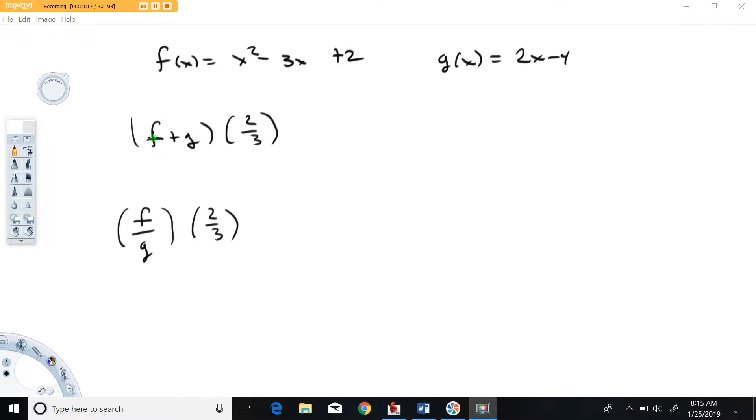We're going to try to find f plus g of two-thirds. Now this is function language, I have to know how to read this. This is not a times here. What this means is to find this function and then two-thirds is the input. So first of all let's talk about finding that function.